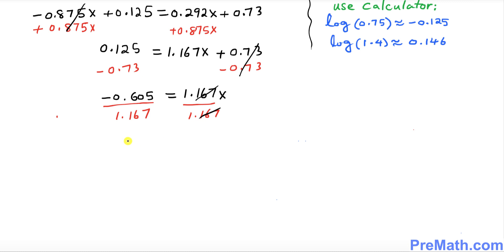So we ended up x is approximately equal to when you divide this one it's gonna give you negative 0.52 and that is our solution. Thanks for watching and please subscribe to my channel for more exciting videos.